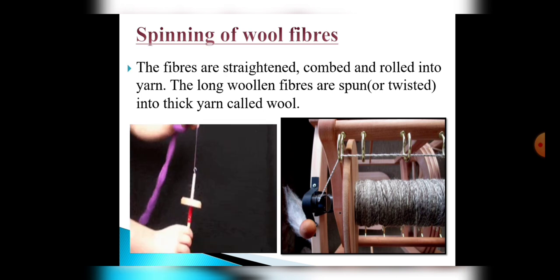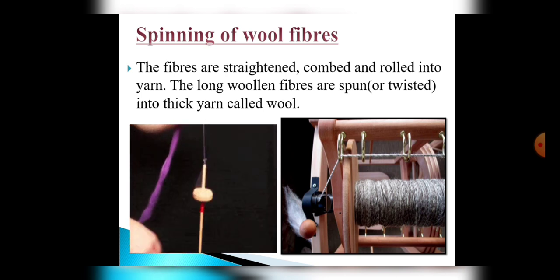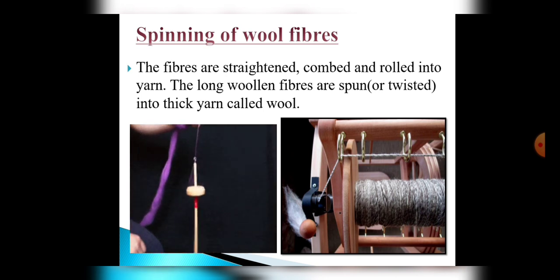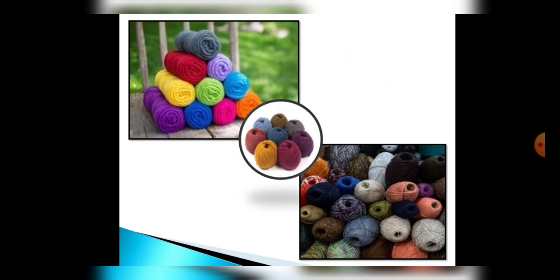After all these processes, this is how we get wool — with different quality, different texture, and different color. So this was all about the steps in the production of wool fiber. In our next class we will study about silk.